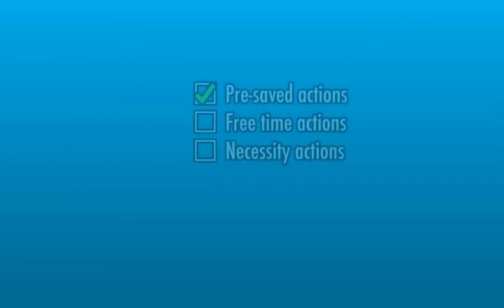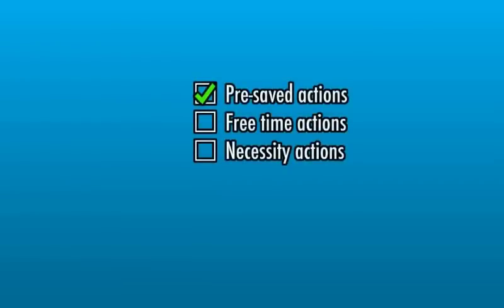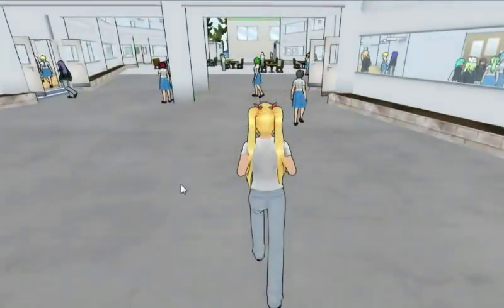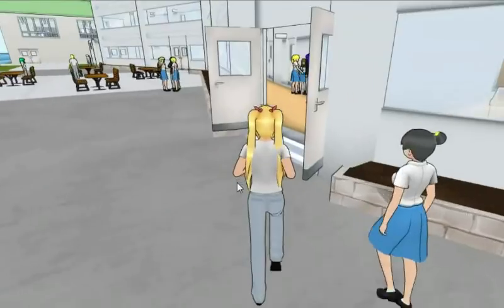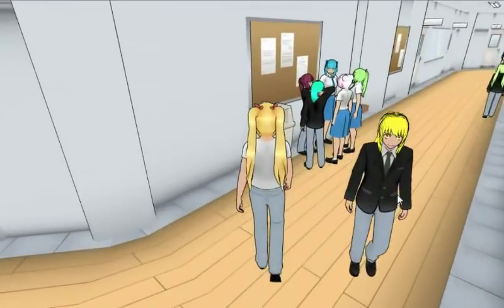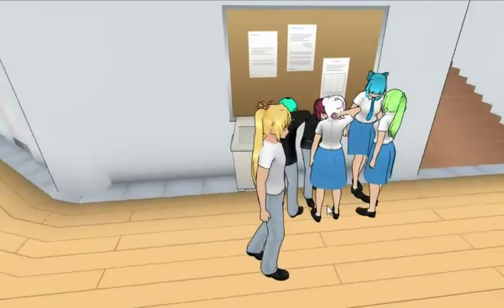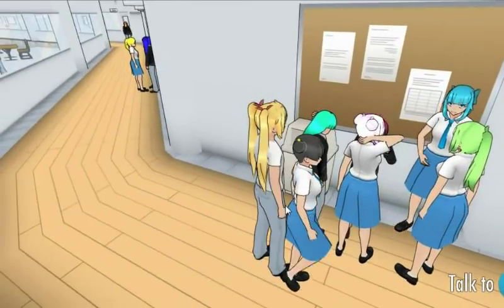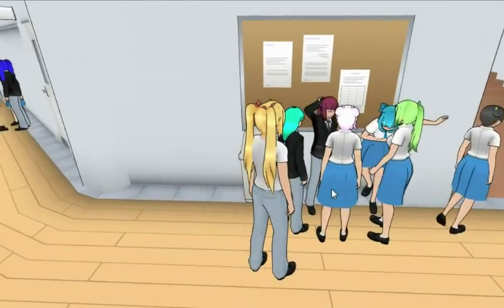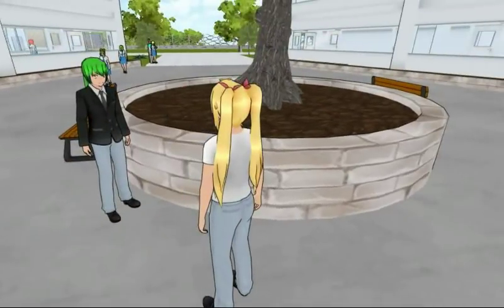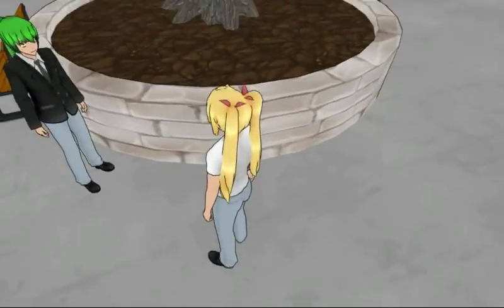On the previous build I showed that characters have pre-saved and automatic actions, and that the pre-saved are complete. On this new build, the free time actions are also done. Currently it can be seen during class break time — students will wander around, sit somewhere, or go to a chat spot. At a chat spot, if a character is alone they will wait for someone else, and once there's at least one other person to talk to, they'll chat.